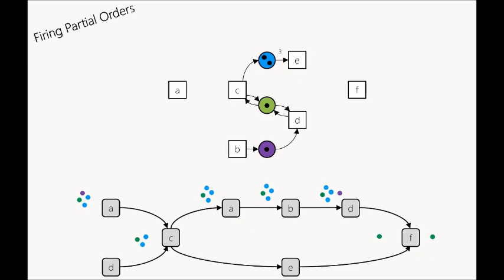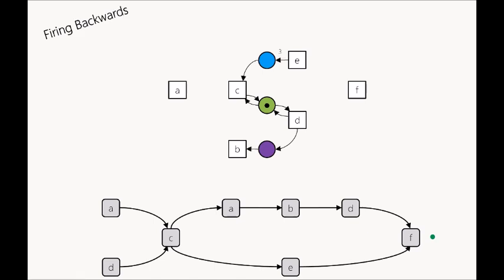So we take a different approach. We already constructed the final marking by firing all the events — this is unique and does not depend on the order of execution. We set the Petri net to the final marking, flip all the arcs in the net, flip all the arcs in the partial order, and then fire again but backwards. We take the now-initial marking and put it to the first initial event, which is f.